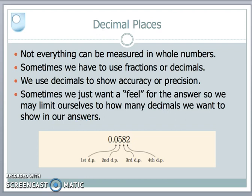So we have to have decimal places or decimal numbers or fractional numbers because not everything in our world can be measured in whole numbers. We have to look at fractional parts. And the decimal places do actually show a level of accuracy and precision in our calculations.